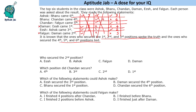Let us verify the conditions. Ashok says Bhanu came sixth — yes, that's true. Bhanu says Chandan came fourth — that's false, so Bhanu is lying, which is correct. Chandan says Fagun came fifth — correct. Daman says Ish came first — wrong, so Daman is lying. Ish says Ashok came third — true. Fagun says Daman came second — false. So this is the solution: Chandan 1st, Ish 2nd, Ashok 3rd, Daman 4th, Fagun 5th, Bhanu 6th.